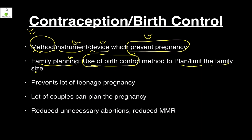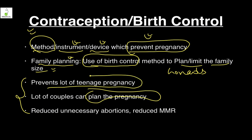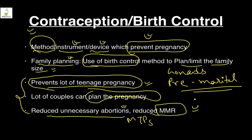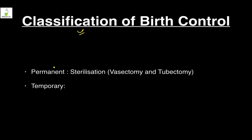If you remove the testes, ovary, or gonads it will prevent pregnancy, but it will not be contraception — we will learn why. Contraception has three huge benefits: you can plan the pregnancy accordingly; it prevents teenage pregnancy since premarital intercourse does not lead to pregnancy if contraception is practiced carefully; and finally it reduces unnecessary abortions and maternal mortality rate.